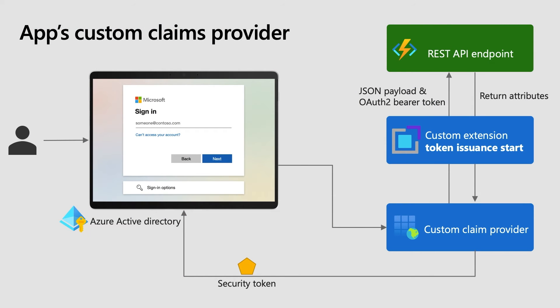Now that you understand the concept of the Custom Claims Provider and its associated custom extension, let's take a look at the flow. The flow starts when a user attempts to sign in to an application. The user is asked to sign in with their credentials. The application is configured with a Custom Claims Provider, so once the user completes all of their authentication challenges and the token is about to be issued by Azure Active Directory, the custom extension Token Issuance Start Event is triggered.